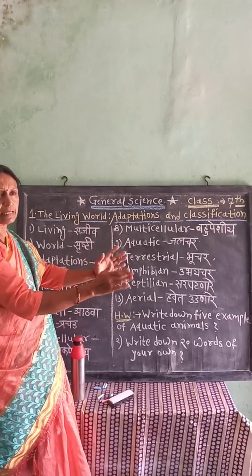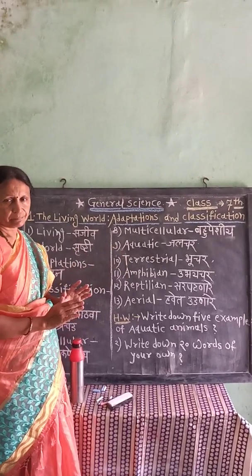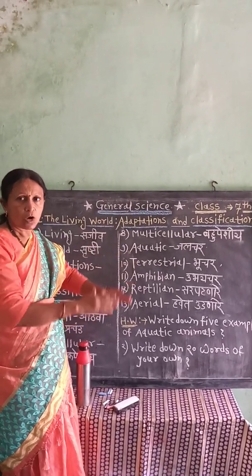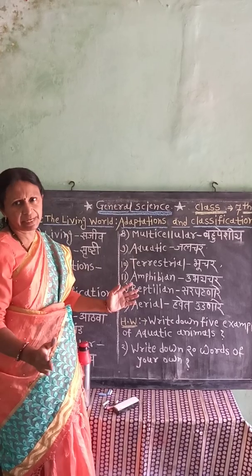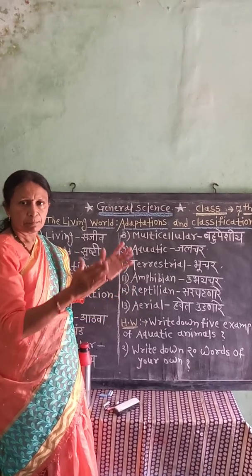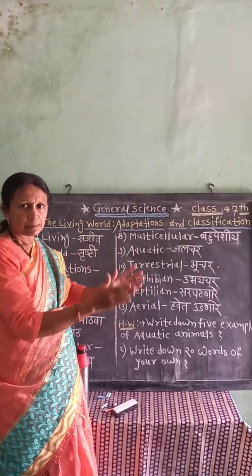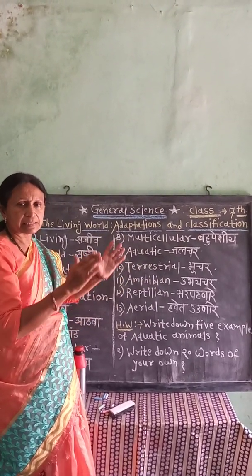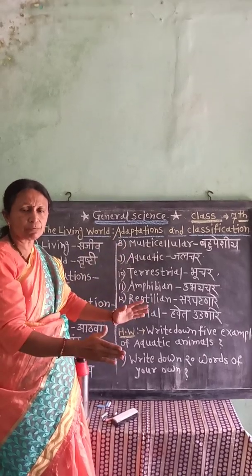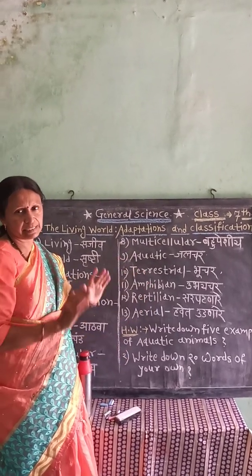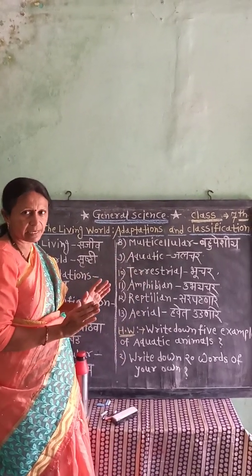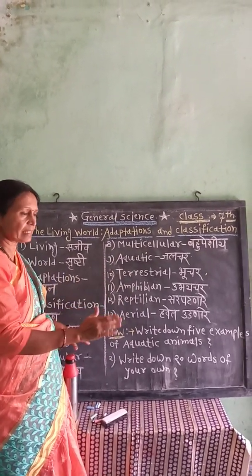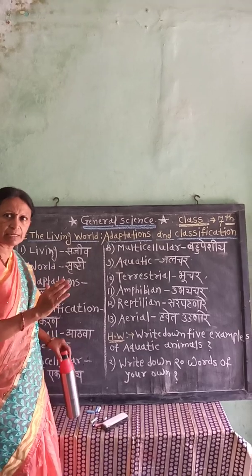Living means Sajeev. All human beings, birds, plants, and animals are examples of living things. Do you understand, student — living and non-living?